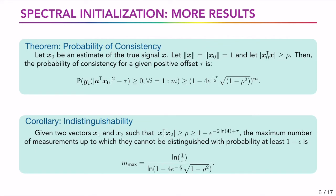Next we have few results on the relationship between the observations and the estimate. The first result gives the bound on the probability of consistency with the measurements. Let x0 be the estimate of the true signal x. Let norm of x and x0 be equal to 1. Let the cross correlation between x0 and x be greater than rho. Then the probability of consistency is always greater than 1 minus 4 into e to the power minus tau by 2 into square root of 1 minus rho square whole power n.